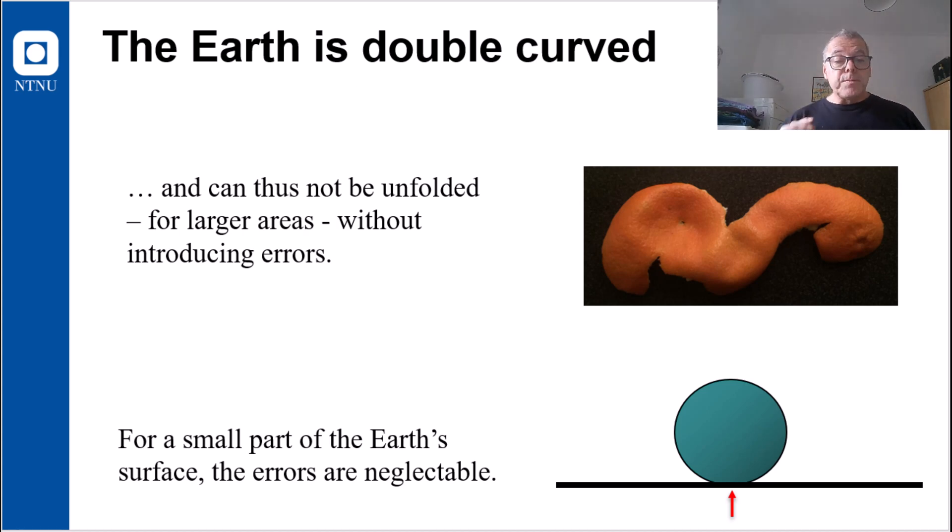However, for a small part of the orange peel, the errors will be small and neglectable. And for the earth, I usually say that this small area means within a UTM zone. I will talk more about that in the third lecture.